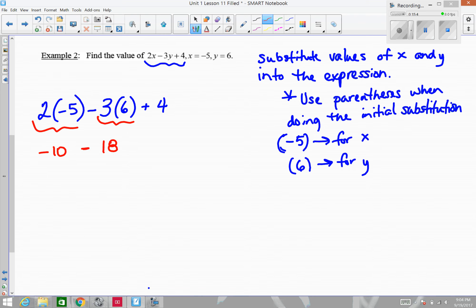So now all we have left is subtraction and addition, and we do these in equal priority, but going from left to right. So I'm going to start with negative 10 minus 18. That's going to give us a negative 28. If I bring down the plus 4, there's just the addition left to do. Negative 28 plus 4 gives us negative 24. And that's our value of our expression when x is equal to negative 5 and y is equal to 6.